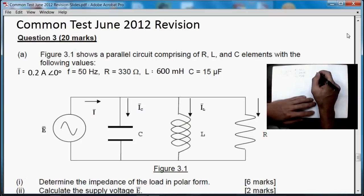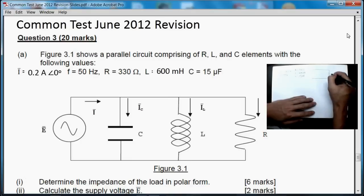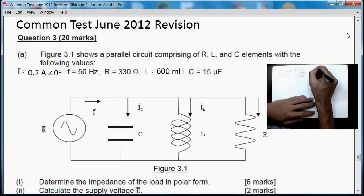Now the circuit is in parallel, which means that all three elements can be drawn as follows: this is the resistor R, the inductor L, and finally a capacitor C, all in parallel with the incoming current and supply voltage E.